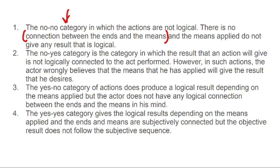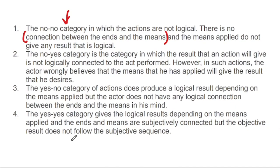The 'yes-no' category: the action does produce a logical result depending on the means applied, but the actor does not have any logical connection between ends and means — meaning the result was achieved without consciously planning it, like getting something right by chance. The 'yes-yes' category: logical results are obtained depending on the means and end applied, but the means are subjectively connected and the objective result does not follow the subjective sequence.